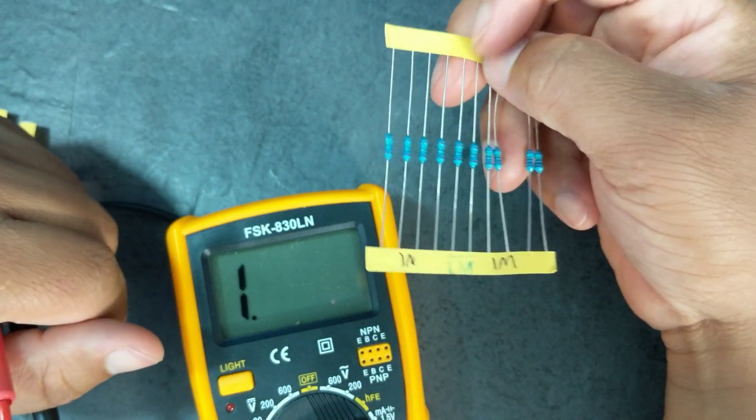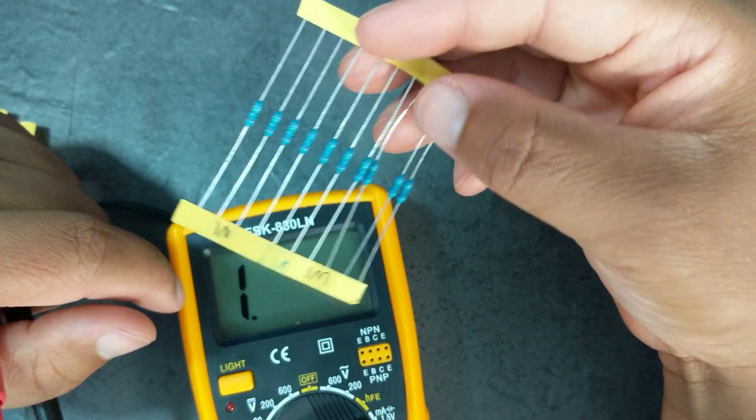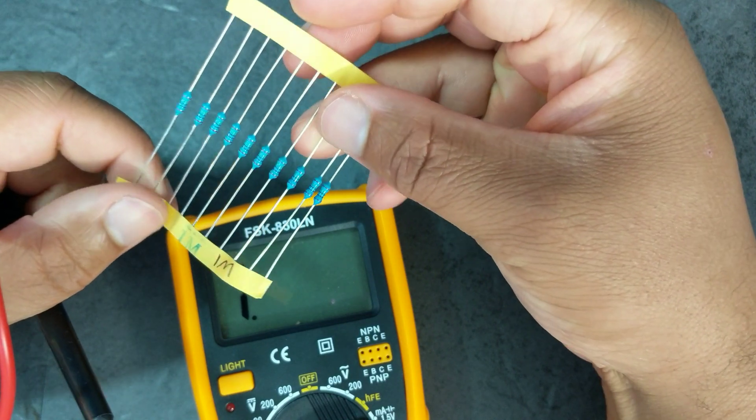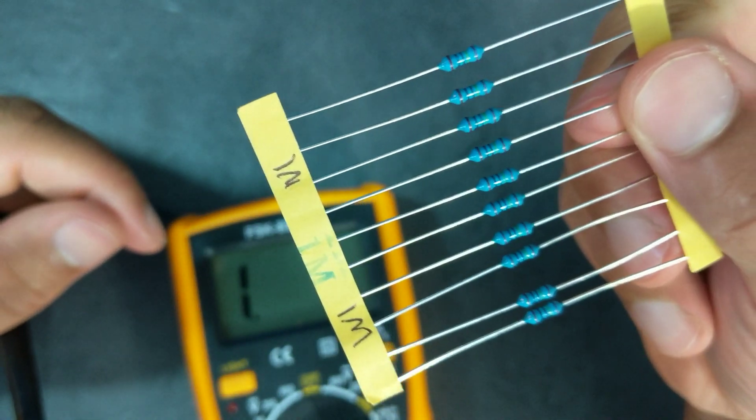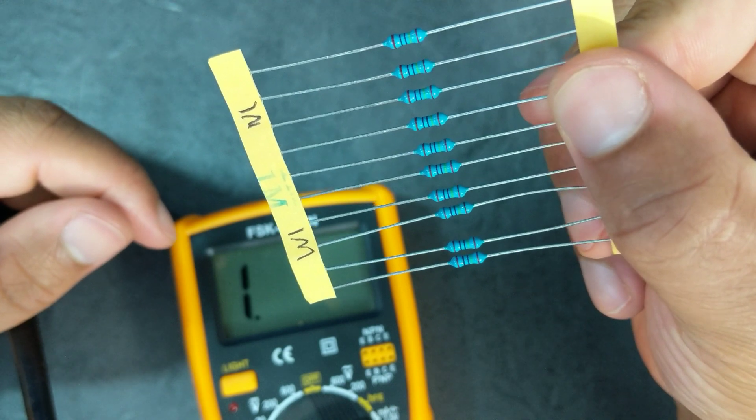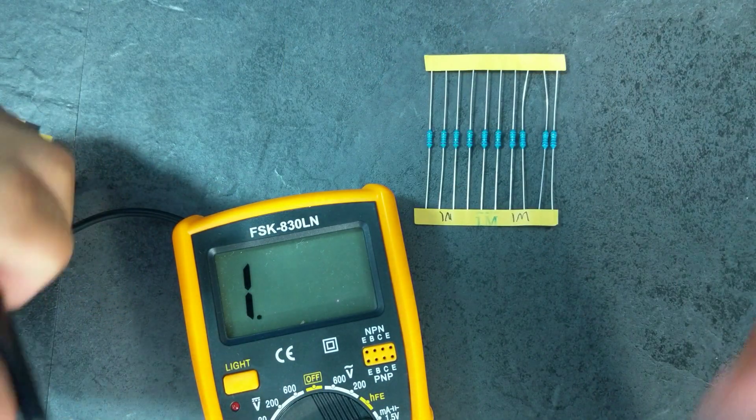And if you have memorized the color chart, good luck reading these because half the time brown, purple, and red all look exactly the same. So yeah, that's how I deal with the cheap blue ohm resistors.